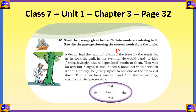Second blank: 'He would bend to kiss [dash] trees lovingly.' We need a definite article here because we already know which trees — the trees by the roadside mentioned in the previous sentence. The only definite article in the circle is 'the,' so the answer is 'the.'